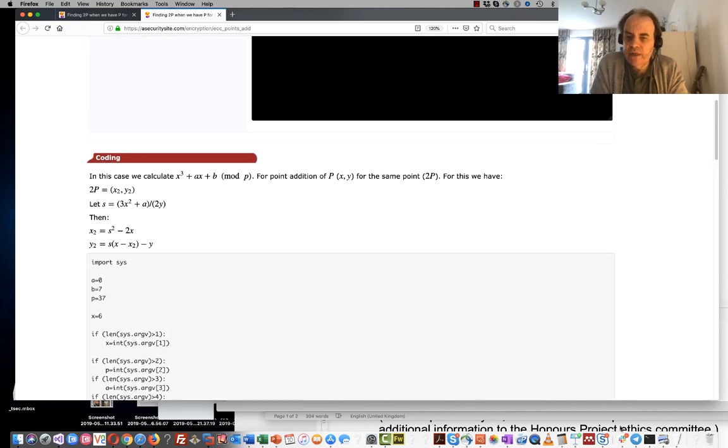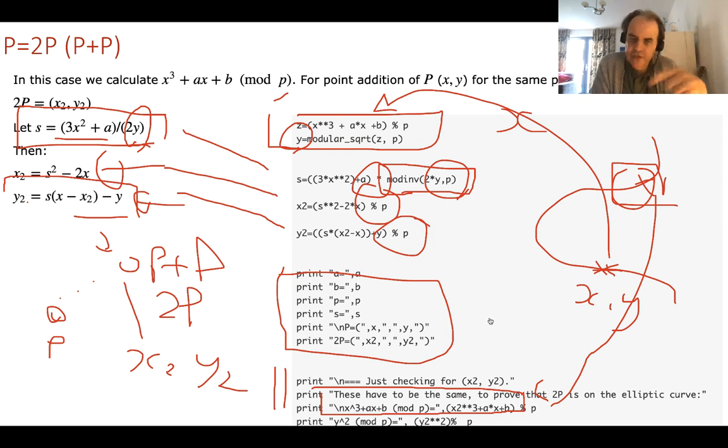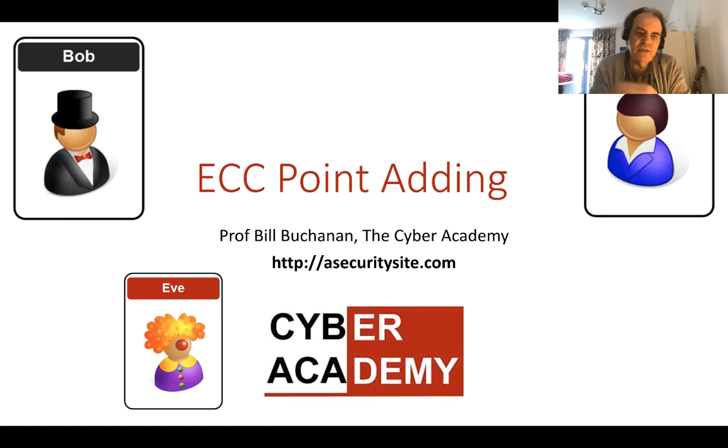And obviously when we're doing our elliptic curve methods, we will do this many times. Sometimes we double, double, double up to very quickly get a large number. So double takes us 2, double it again takes us 4, double it again 8, 16, 32. It doesn't take us too long to be able to get to very high numbers, and then what we can do is just use an add after that. So that's giving you an introduction to elliptic curve point adding.